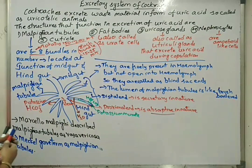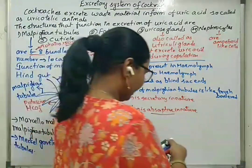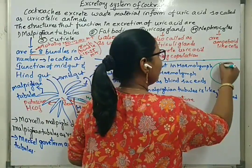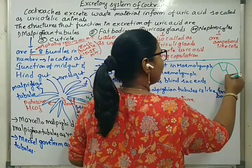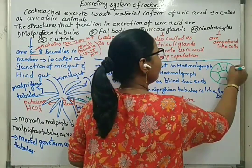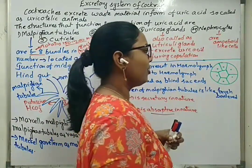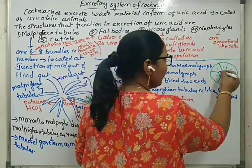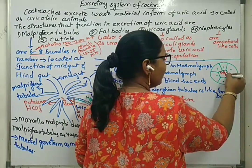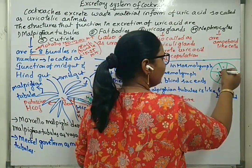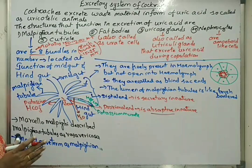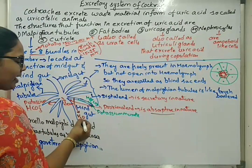These Malpighian tubules are lined with brush-bordered epithelium. We can give a diagrammatic representation: if this is the Malpighian tubule, these will be the epithelial cells in transverse section. The brush-bordered epithelium is mainly useful for filtering useful products, excreting waste material, and supporting reabsorption of water back to the body.